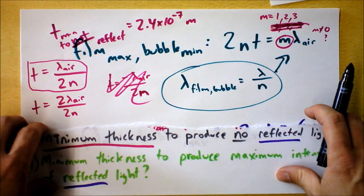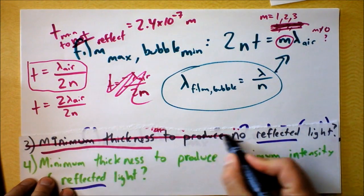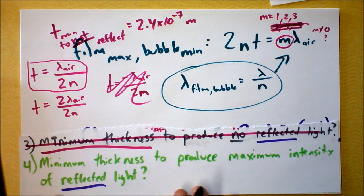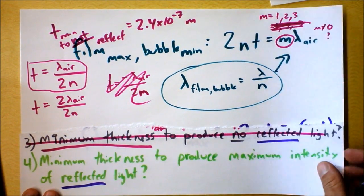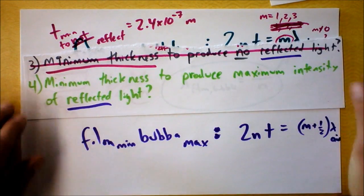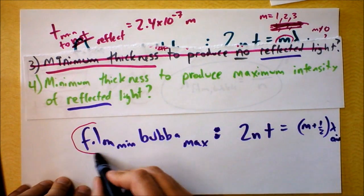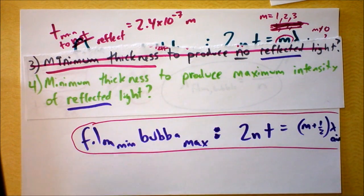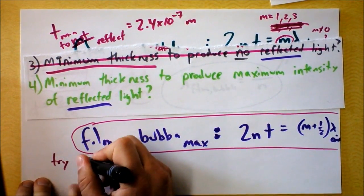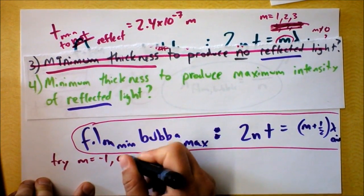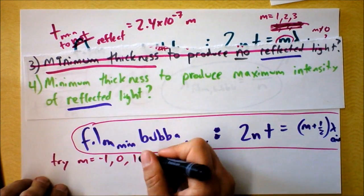Alright, let's do the other problem. Minimum thickness to produce maximum intensity of reflected light. So we'll go down to this equation right here, which is film min bubble max. And it says we have to do M plus a half. So I'm going to try out some M's and see what we get. I'm going to try M equals negative one, zero, and one.